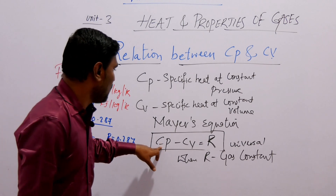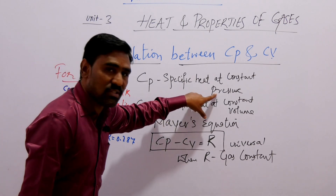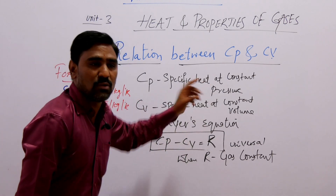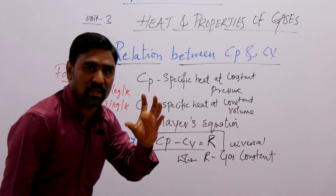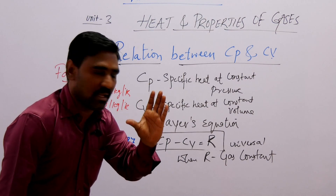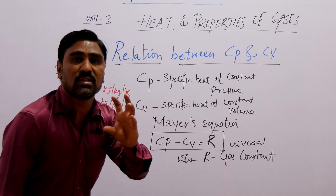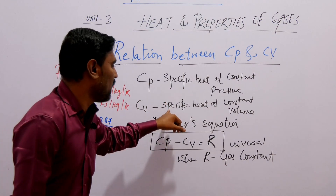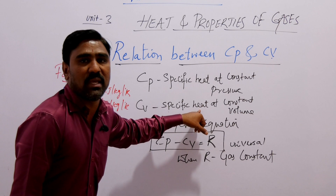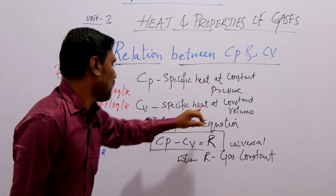The main equation Cp minus Cv equals R can be used to find the relation between Cp and Cv, where Cp is specific heat at constant pressure and Cv is specific heat at constant volume.